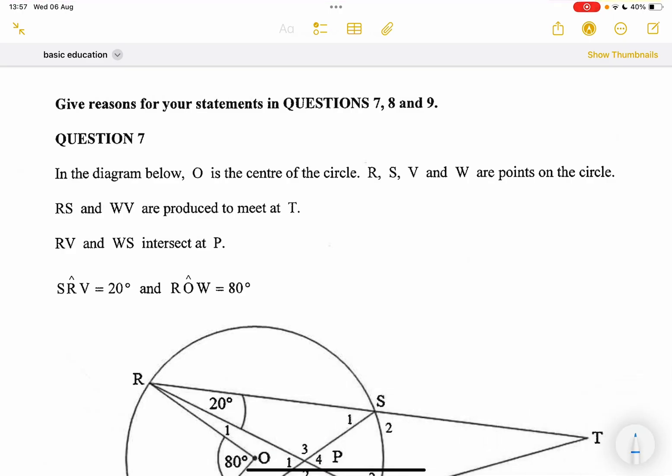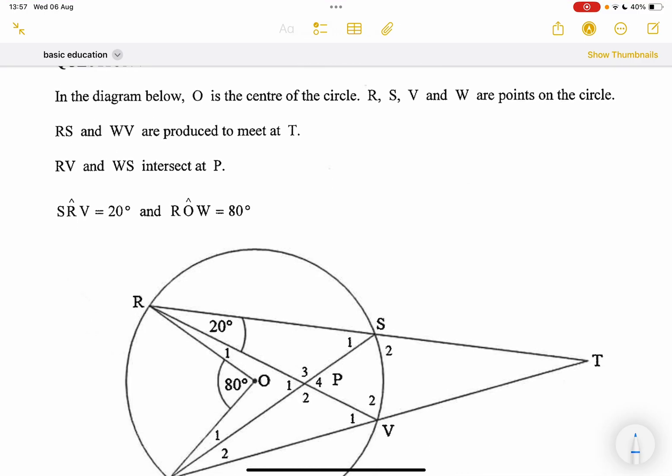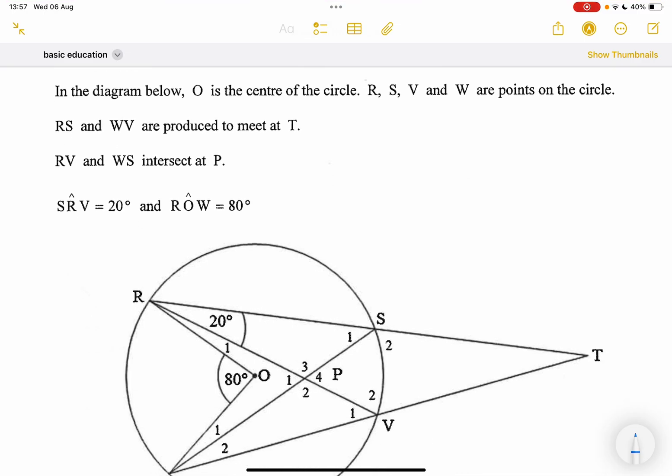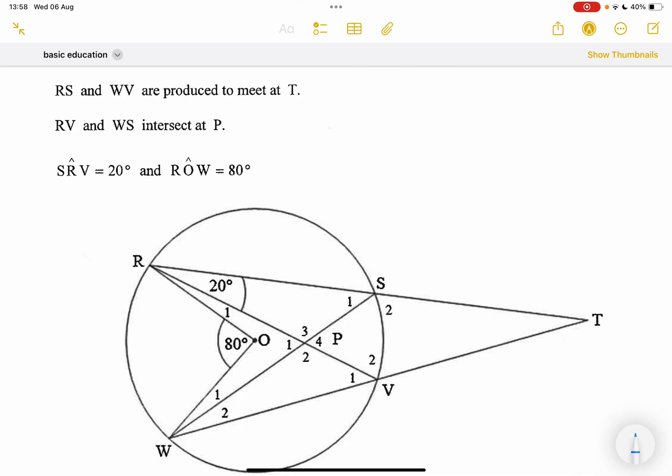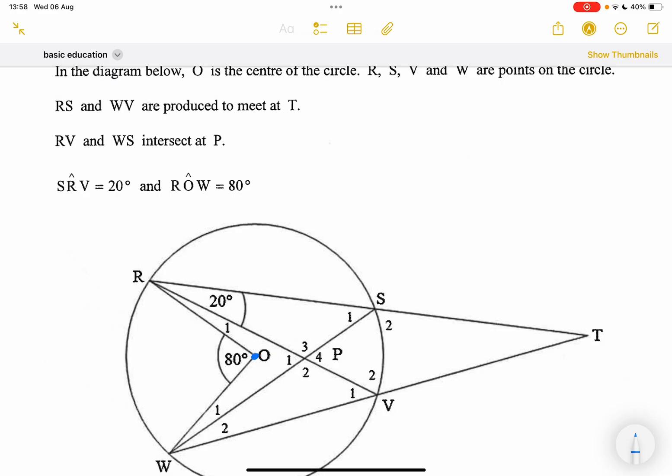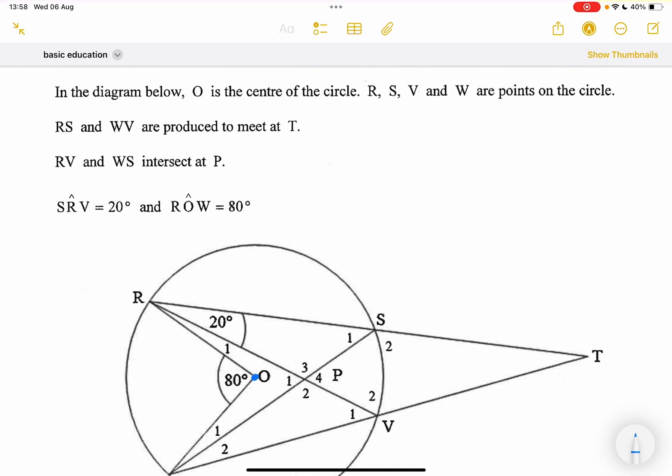They say in the diagram below, we've got O which is the center of the circle. R, S, V, and W are points on the circle. We know we've got center O over there, so that makes OR as well as OW our radii. I always prefer that we indicate that those two lines are equal.